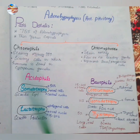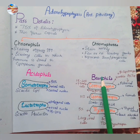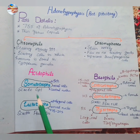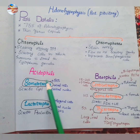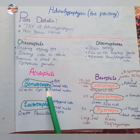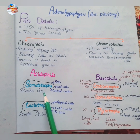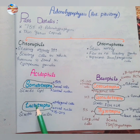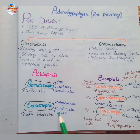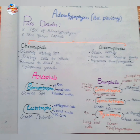Chromophils are further subdivided into two types: acidophils and basophils. Acidophils are of two types: somatotrophs and lactotrophs. Somatotrophs form about 50% of all chromophils; these are oval-shaped cells with a central nucleus and they secrete growth hormone. Lactotrophs are polygonal cells with oval nuclei and form about 15 to 20% of the total cells in the pars distalis.